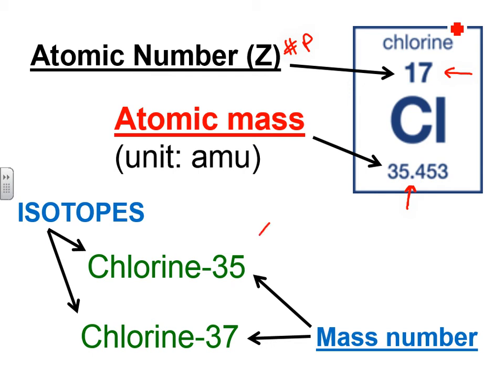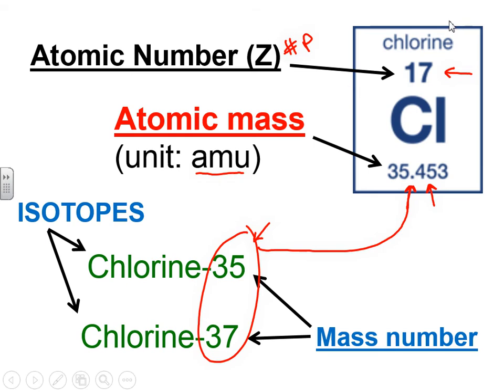This 35.453 actually comes from the isotopes of chlorine. There are two isotopes of chlorine — 35 and 37 — and these two put together somehow determine the atomic mass of chlorine. The central idea is how we come up with this atomic mass number. Atomic mass will be in units of AMU, atomic mass units.